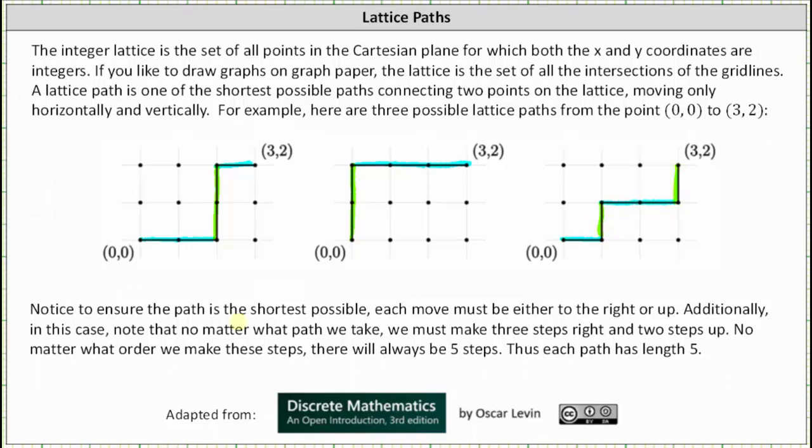Notice to ensure the path is the shortest possible, each move must be either to the right or up. Additionally, in this case, note that no matter what path we take, we must make three steps right and two steps up. No matter what order we take these steps, there will always be five steps, thus each path has length five.